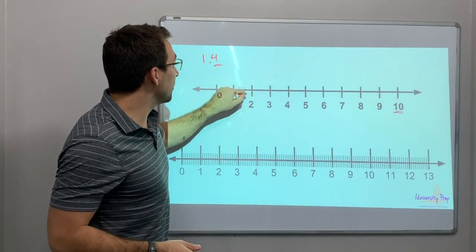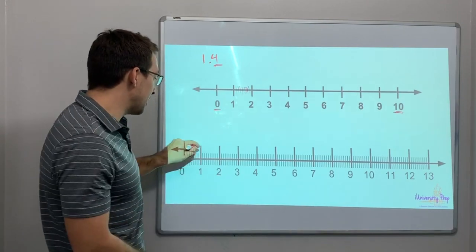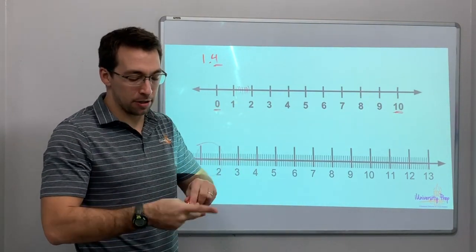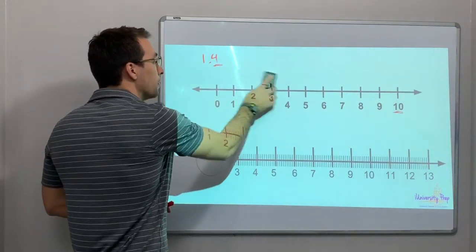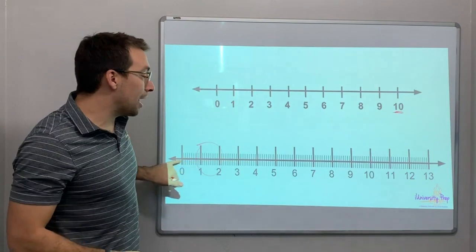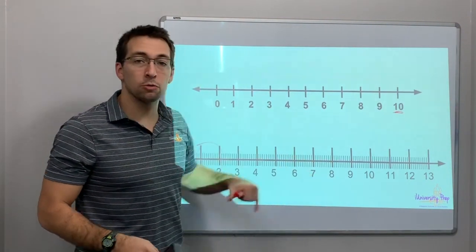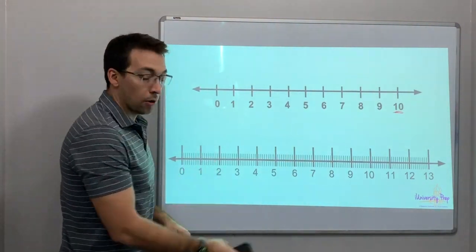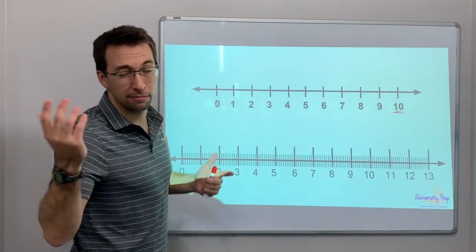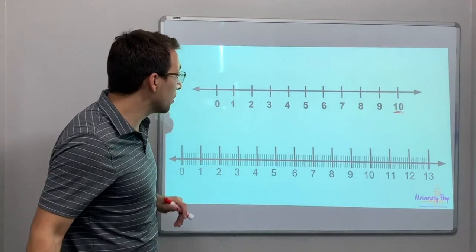There's 10. So here we go. There's 10 additional hash marks, tick marks. So looking at a number line of whole numbers versus a number line of 10ths, this is what your number line is going to look like with a decimal value, with a decimal or fraction value.